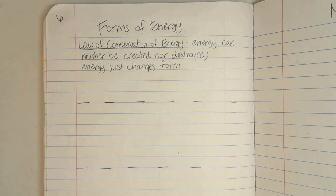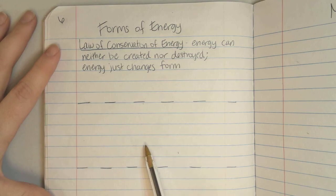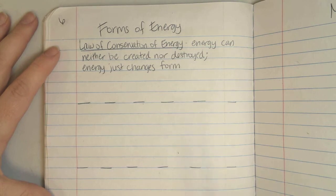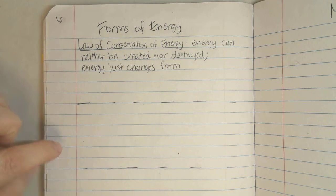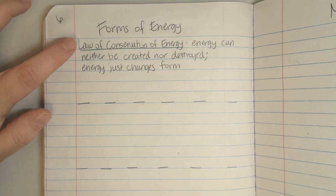We're going to talk about seven different forms of energy. So I divided this page into four sections. I'm going to divide page seven into four sections. I have a wide ruled journal, so each section is six lines.